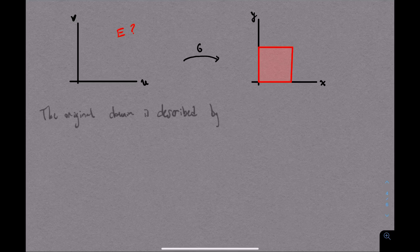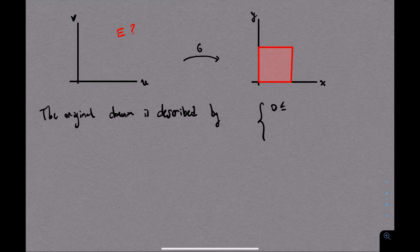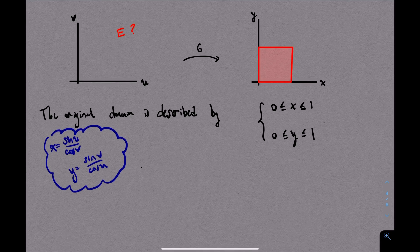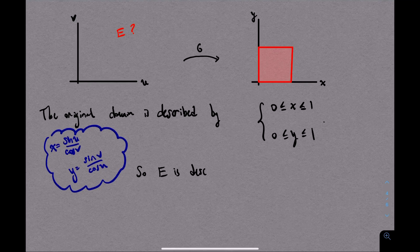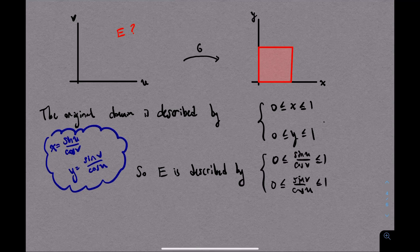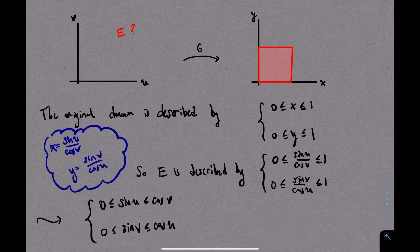Recall that we have this map going from the UV world to the XY world. We know that the region in the XY world is the unit square, and we need to figure out the corresponding region to the left. A good way to approach these things is to write down the inequalities that describe the region on the right, which in this case is x between 0 and 1 and y between 0 and 1, and then use our substitution to come up with inequalities involving u and v, and then we'll see if we can unravel what that means.